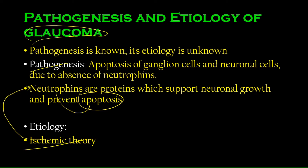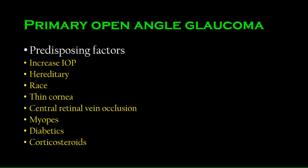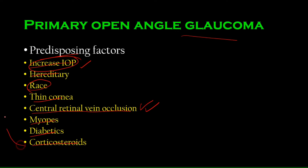Let us go back to our main topic: primary open-angle glaucoma. There are certain predisposing factors. The first and foremost is increased intraocular pressure. Others include family history, being African-American, having a thin cornea, myopia, central retinal vein occlusion, diabetes, and corticosteroid use. Specifically, those first four carry a very high risk, with increased intraocular pressure being the most important.